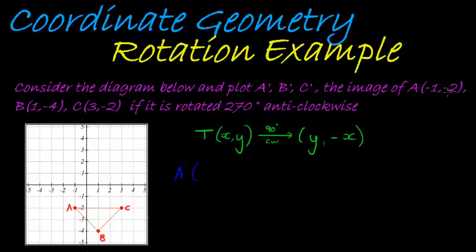So A' is therefore - A used to be (-1, -2), so now I swap them around as it tells me here. The y comes here, so this is now -2, and the old x gets multiplied with a negative, so it used to be -1 times negative gives me positive 1. That's my A'.